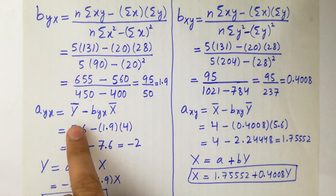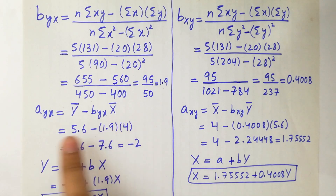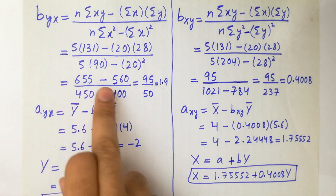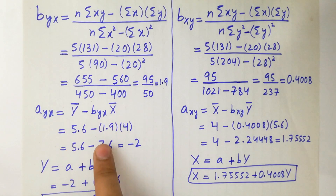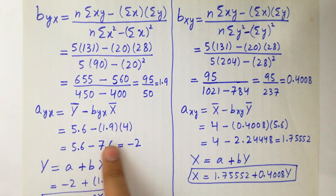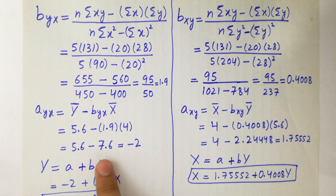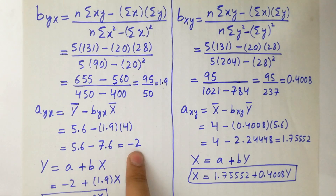Next, a_yx = ȳ − b_yx·x̄ = 5.6 − 1.9×4 = 5.6 − 7.6 = −2. So the regression equation y on x is: y = −2 + 1.9x.